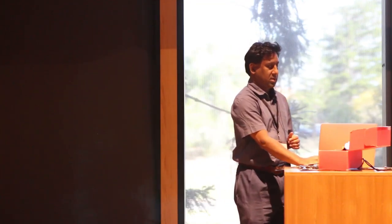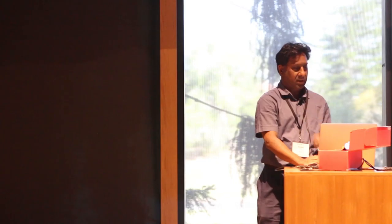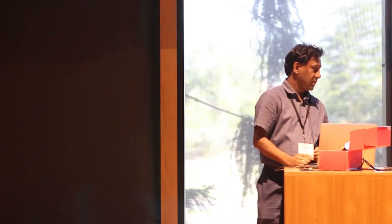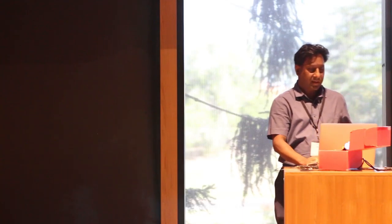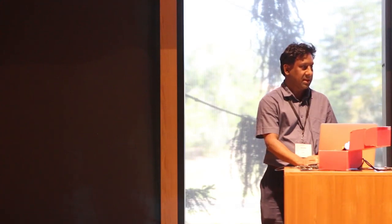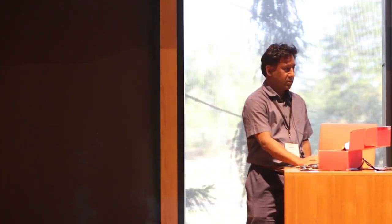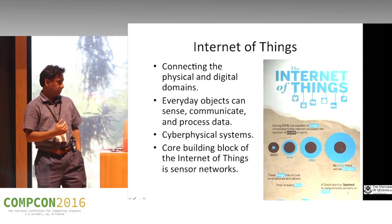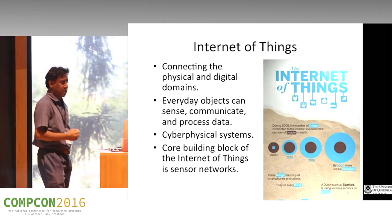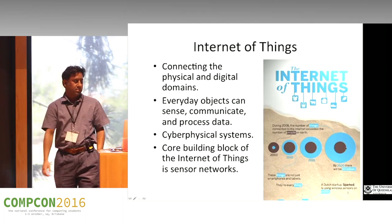Cyber-physical systems are really a core building block of what we call the Internet of Things. This graphic here shows from 2003 the Earth's population versus the number of Internet-connected devices. In 2003, there were more people than Internet-connected devices. By 2010, there were more Internet-connectable devices than people, and it starts to increase. By 2020, it's predicted to be about 50 billion Internet devices compared to the Earth's population — so obviously by 2020 we expect Skynet to be fully active.